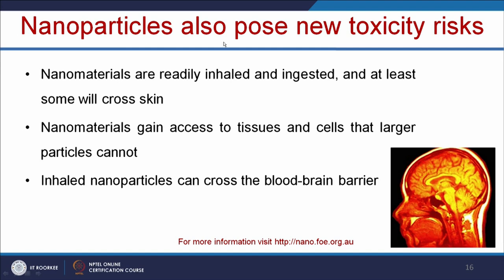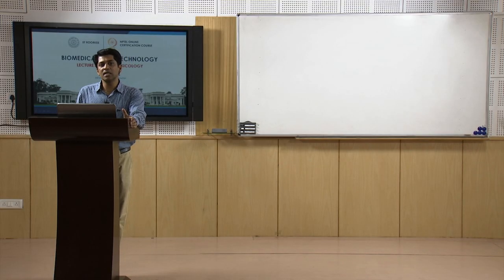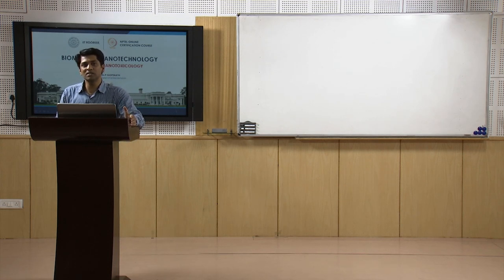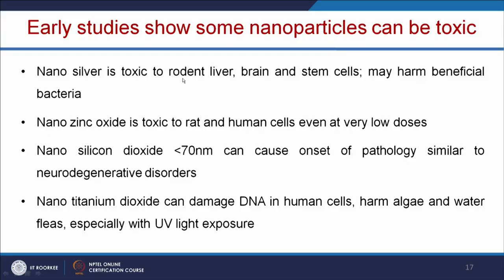Nanoparticles pose new toxic risks. Nanomaterials are readily inhaled and ingested, and at least some will cross the skin. Nanomaterials gain access to tissues and cells more than larger particles, and inhaled nanoparticles can also cross the blood-brain barrier — most other drugs cannot do this. Nano silver is toxic to rodent liver, brain, and stem cells and may harm beneficial bacteria. Nano zinc oxide is toxic to rat and human cells even at low doses. Nano silicon dioxide less than 70 nm can cause pathology similar to neurodegenerative disorders.